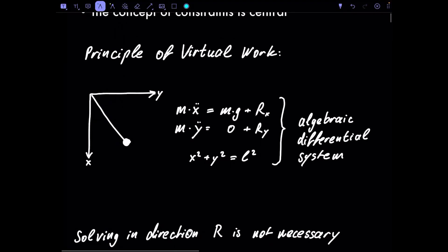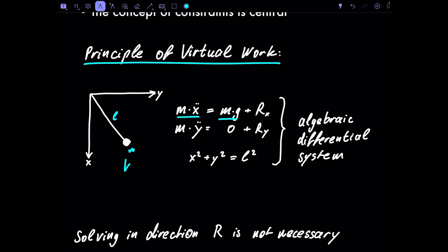Let's look at a simple example to understand why the principle of virtual work is so useful. Here we have a simple pendulum with mass m and length l, and we want to get the equation of motion for this system. First, we have acceleration in direction x given by mg, since gravity acts on our system, plus a reaction force in that direction. Then we have the acceleration in direction y.